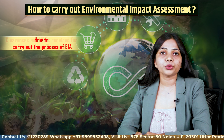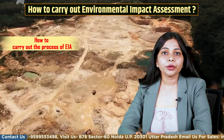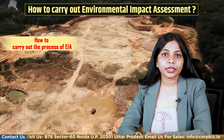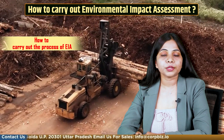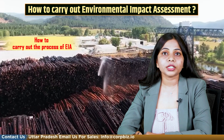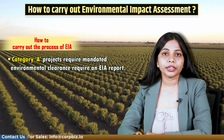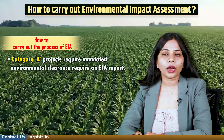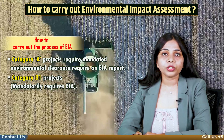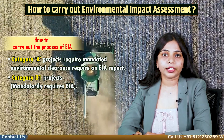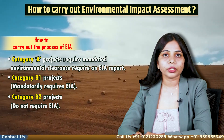Now let's understand how to carry out the EIA process. Environmental impact assessment is mandated for category A and B1 projects as per EIA notification 2006. Category A projects require mandated environmental clearance and require an EIA report. Category B1 projects mandatorily require EIA. Category B2 projects do not require EIA.